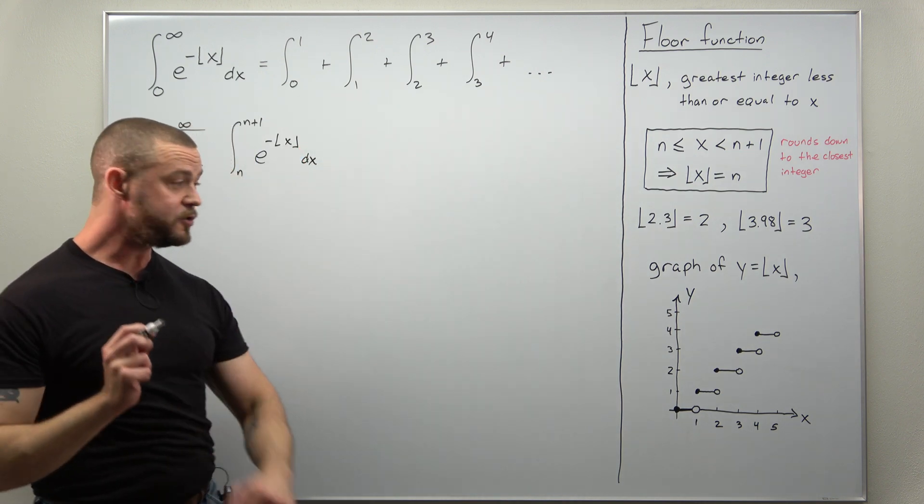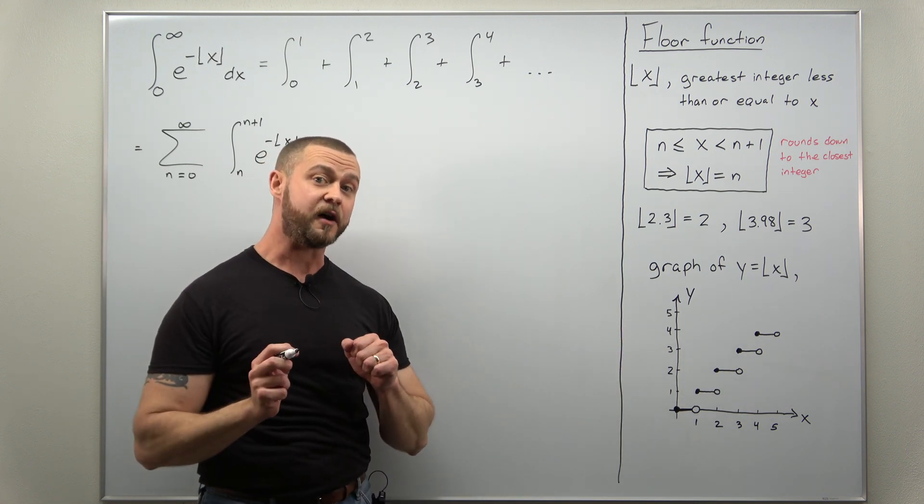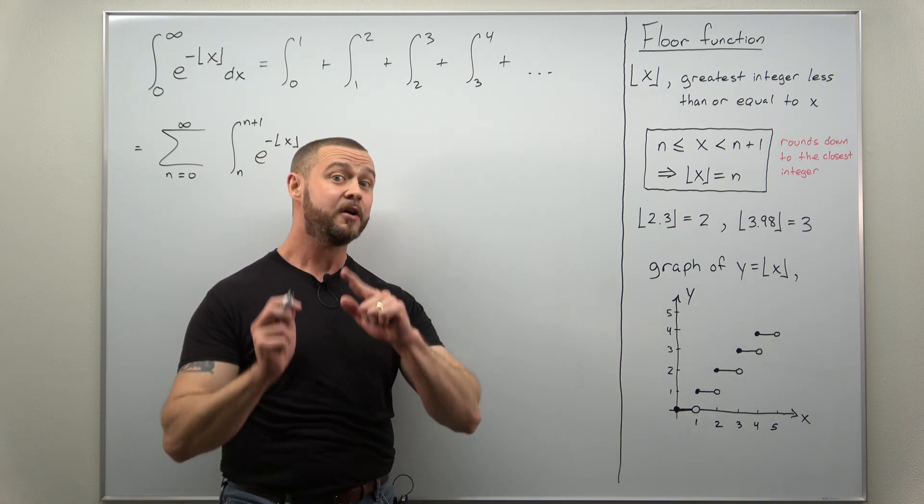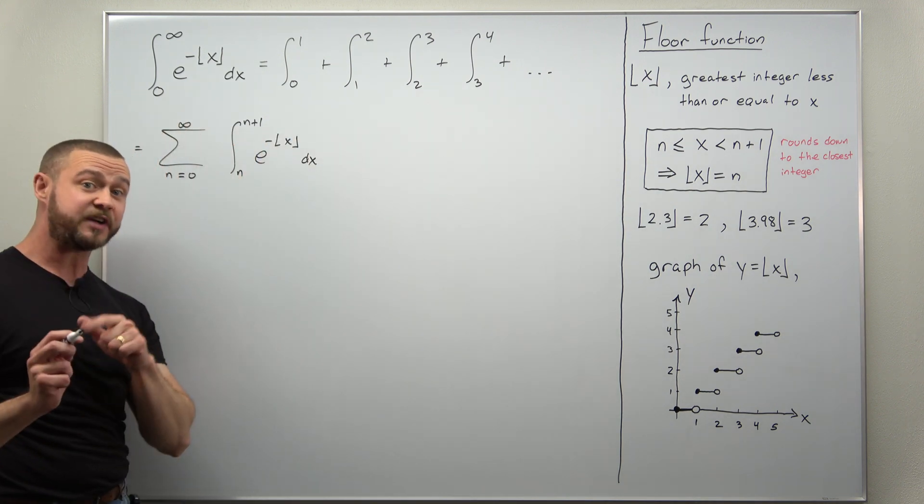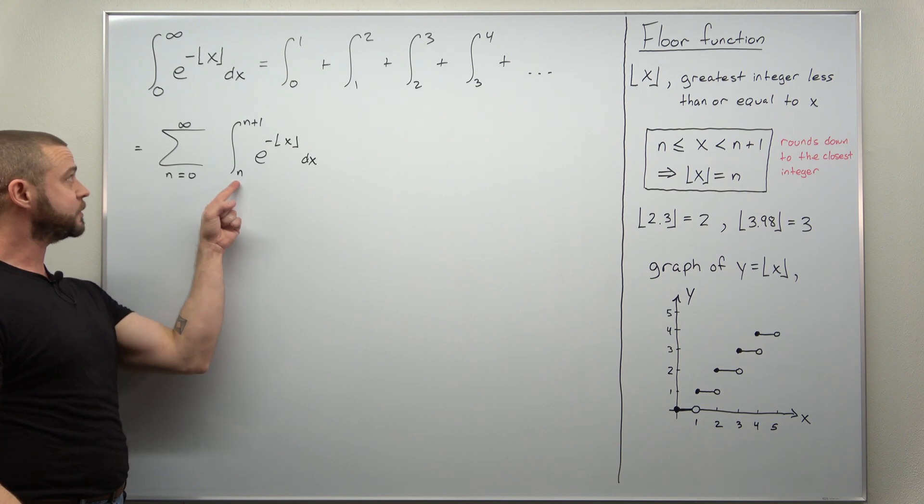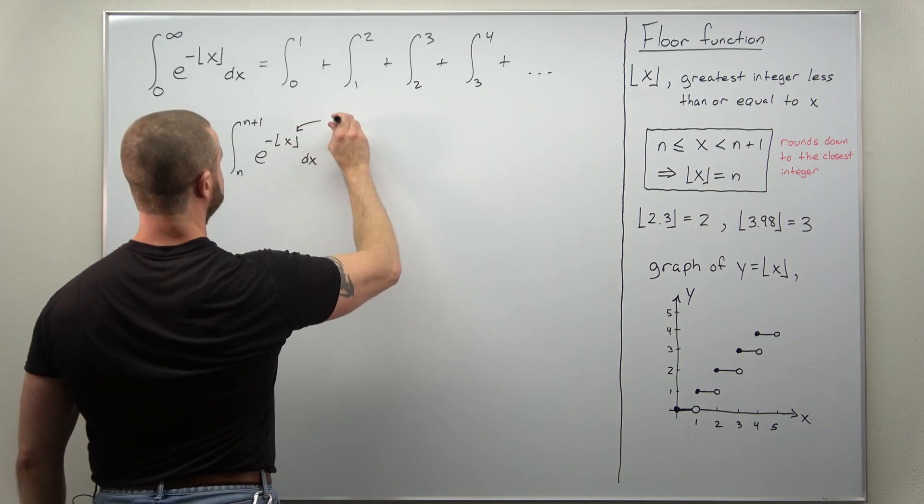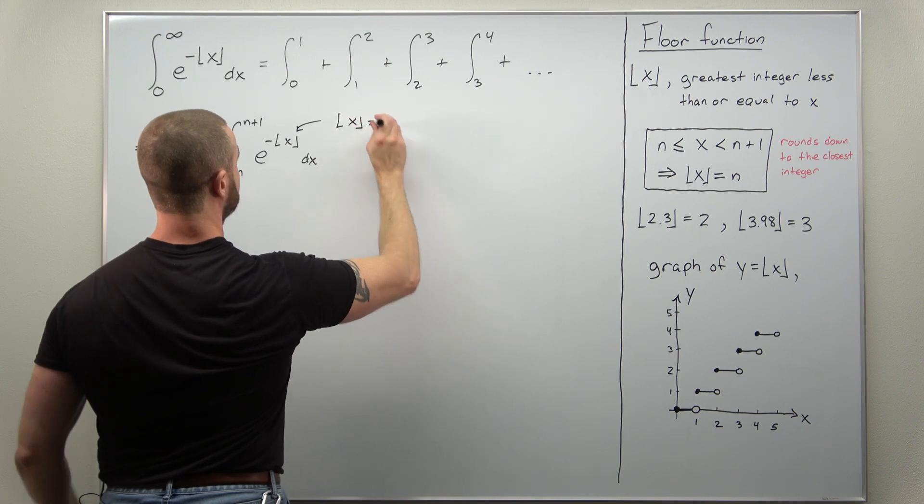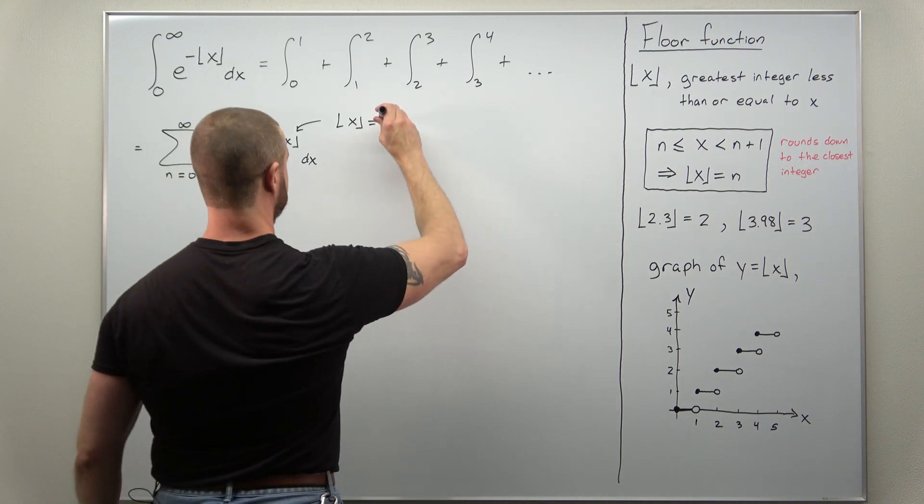Now we can make use of our basic fact here that the floor function will be constant over an integer interval. And that's exactly what we have here. Notice our integral goes from n to n plus 1. So here the floor function just rounds down to the next smallest integer which would be n on that interval.